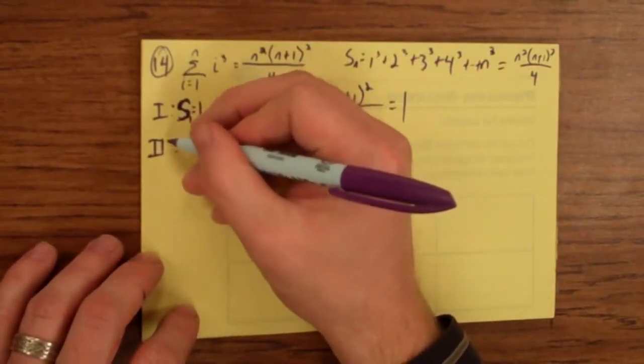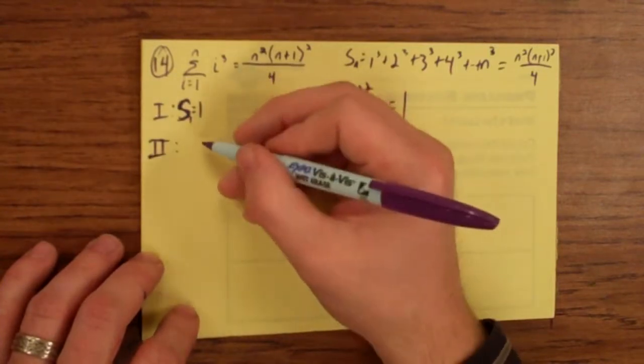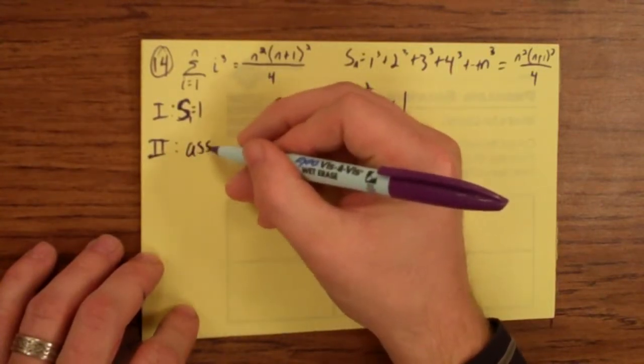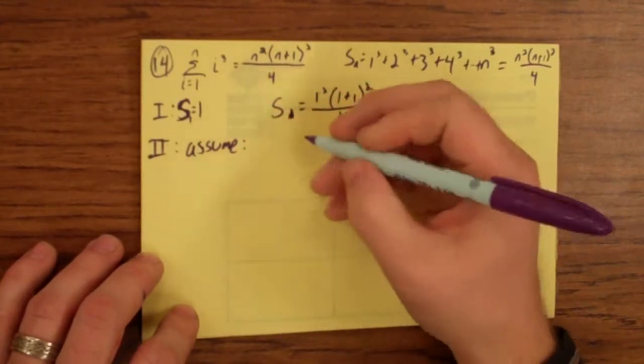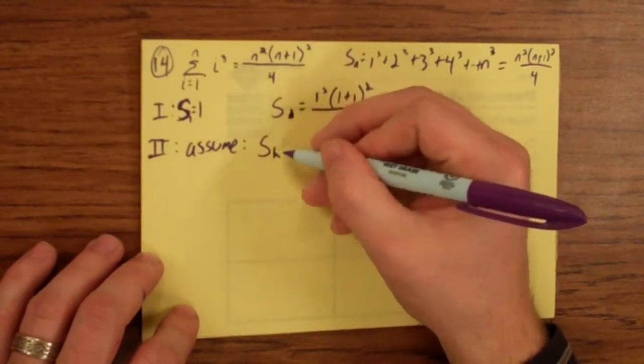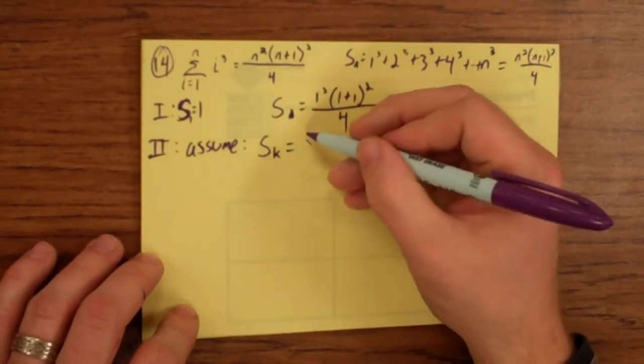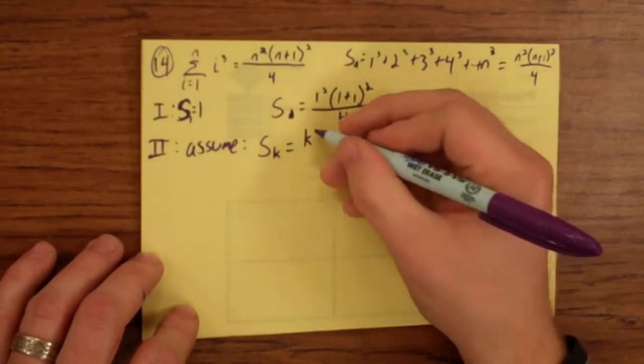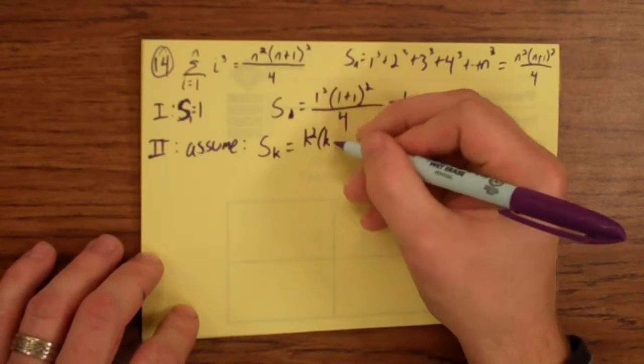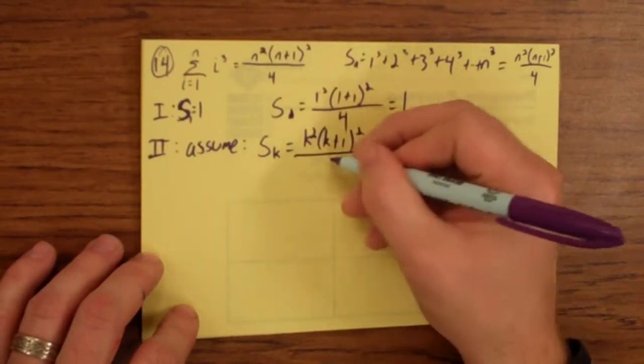The second part, the first part of part 2, is the assuming. So assume that for the first k cubes, I can use this formula. So I could just go k squared times k plus 1 squared over 4.